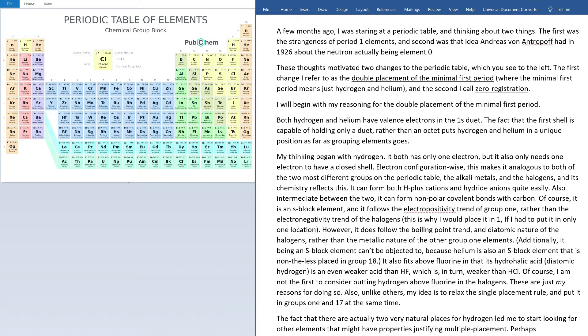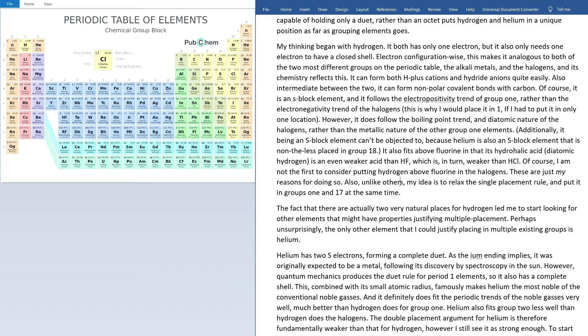Additionally, it being an S-block element can't be objected to because helium is also an S-block element that is nonetheless placed in group 18 normally. Beyond this, it fits above fluorine in that its hydrohalic acid, which is just diatomic hydrogen, is an even weaker acid than HF, which in turn is a weaker acid than HCl. Of course, below that they're just strong acids, but HF already starts the trend of moving towards weak acids, and nobody's denying that fluorine is a halogen, so it does technically fit the trend at the very top of the group. Of course, I'm not the first to consider putting hydrogen above fluorine in the halogens. These are just my reasons for doing so.